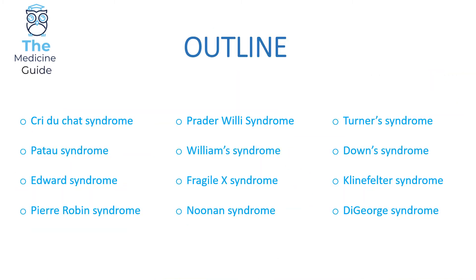The outline of today's video is that I'm going to be covering 12 high yield genetic conditions which typically and classically crop up in final year exams. We're going to discuss Cri du Chat syndrome, Patau syndrome, Edwards syndrome, Pierre Robin syndrome, Prader-Willi syndrome, Williams syndrome, Fragile X syndrome, Noonan syndrome, Turner syndrome, Down syndrome, Klinefelter, and DiGeorge syndrome.